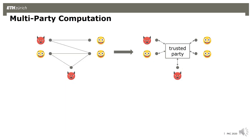This is about multiparty computation, or MPC, where a bunch of parties, some of which may be corrupted, want to run some protocol which is almost as good as a trusted third party who just takes the inputs and distributes the outputs to the parties. The protocol should reveal nothing about the inputs except what can be computed from the output of the function.